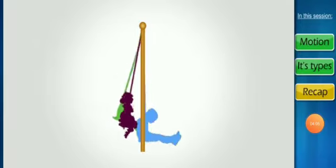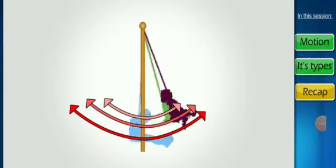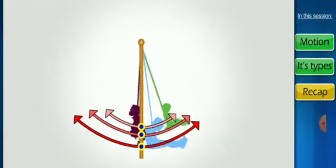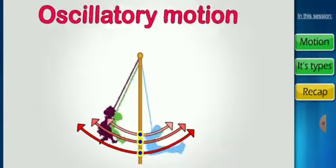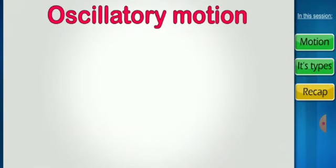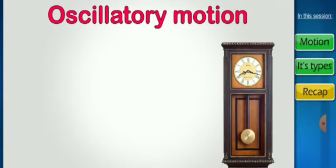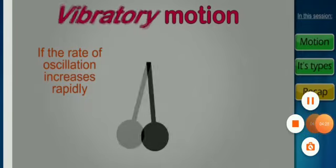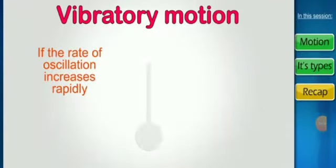And the fourth one is oscillatory motion. The children are moving on the swing, it is a kind of oscillatory motion where one point is fixed and the other point is moving, and so it is known as to and fro motion. In case of pendulum you can see the pendulum is moving in oscillatory motion.